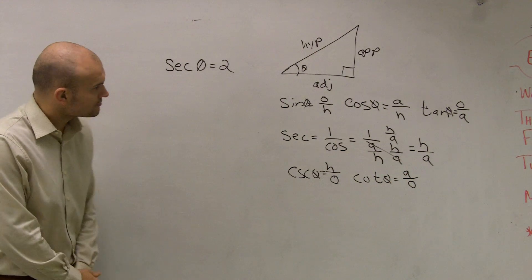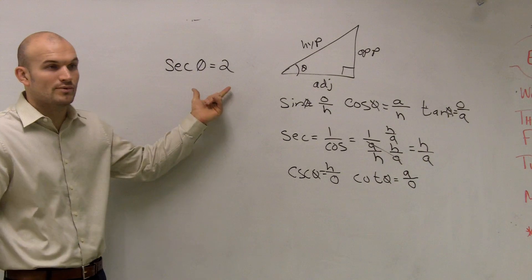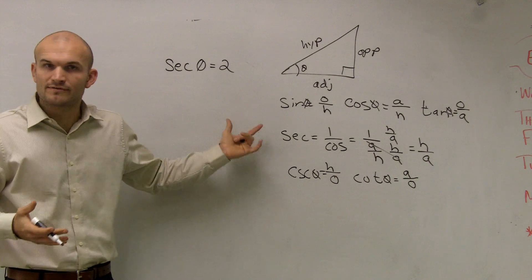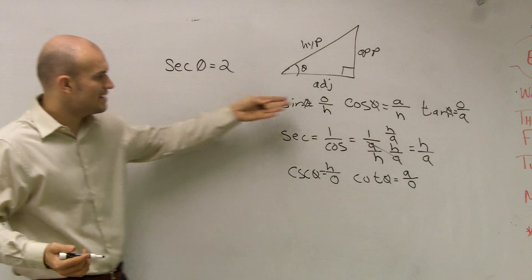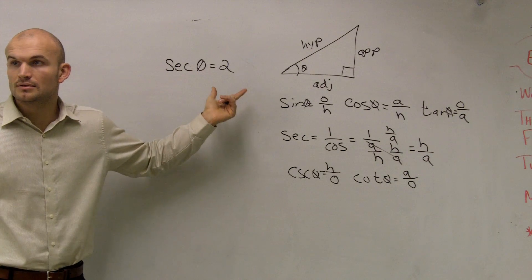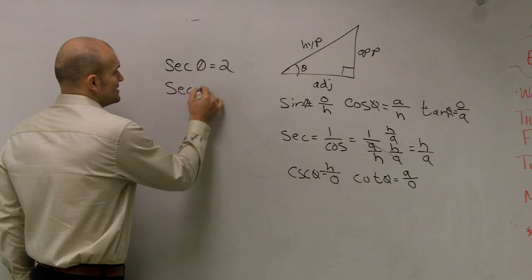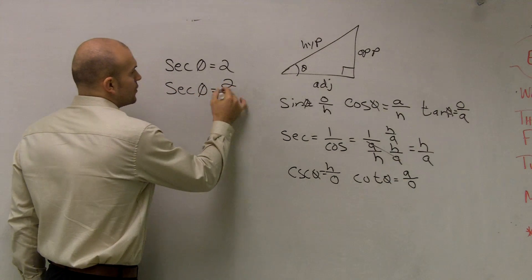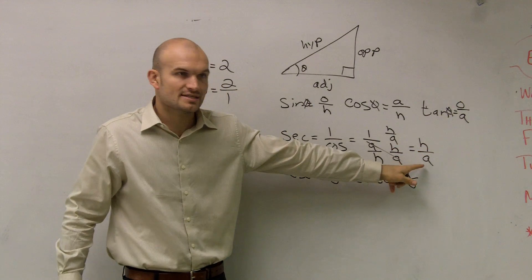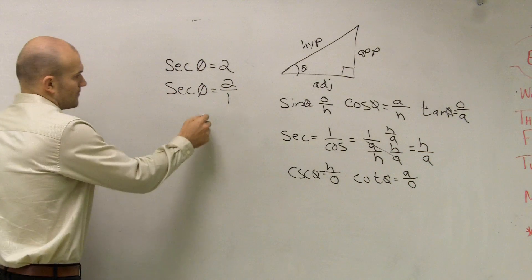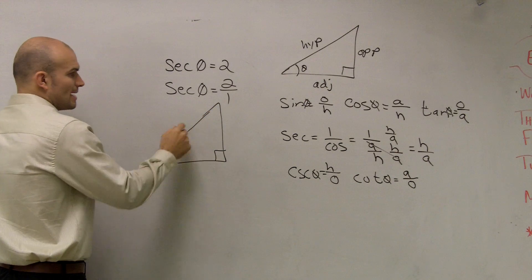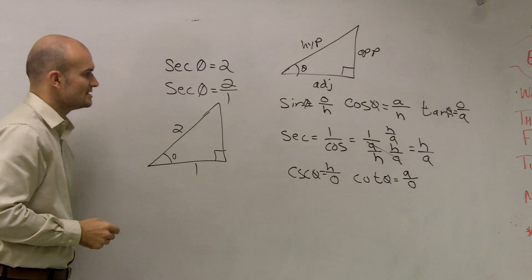Now we have secant of theta equals 2. We need to figure out how to evaluate using this triangle. When you have a whole number, you can write it as a fraction: 2 over 1. So secant of theta equals 2 over 1. Since secant is hypotenuse over adjacent, I can say my hypotenuse equals 2 and my adjacent side equals 1.